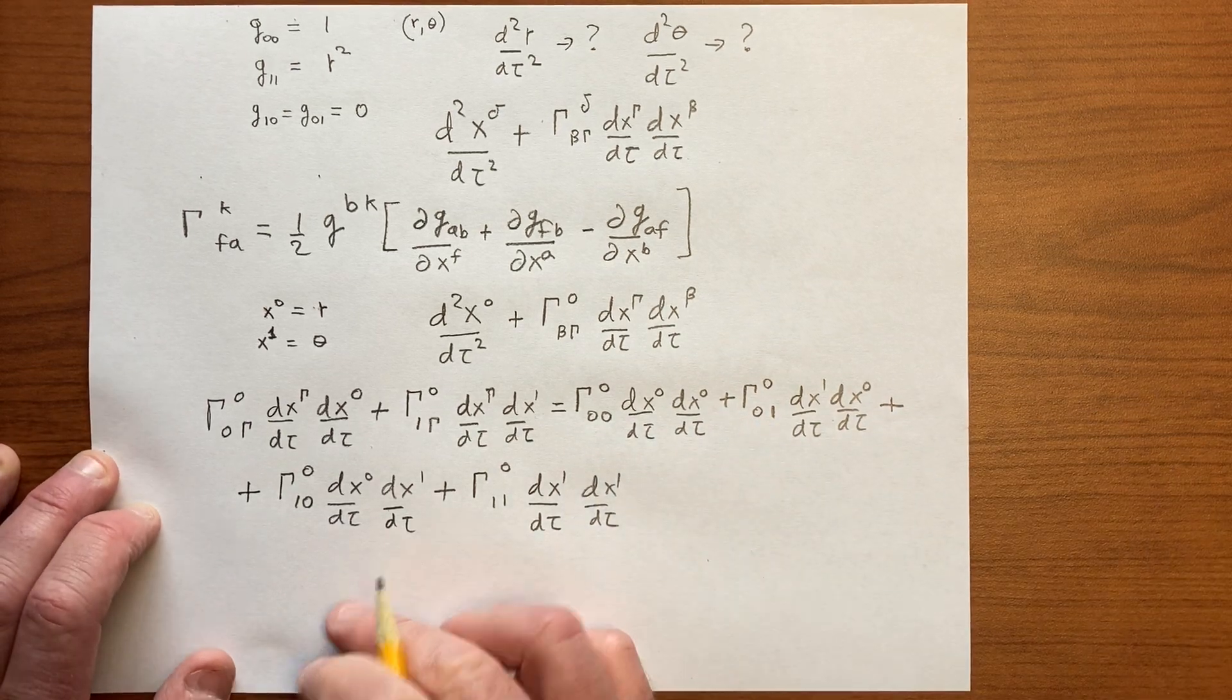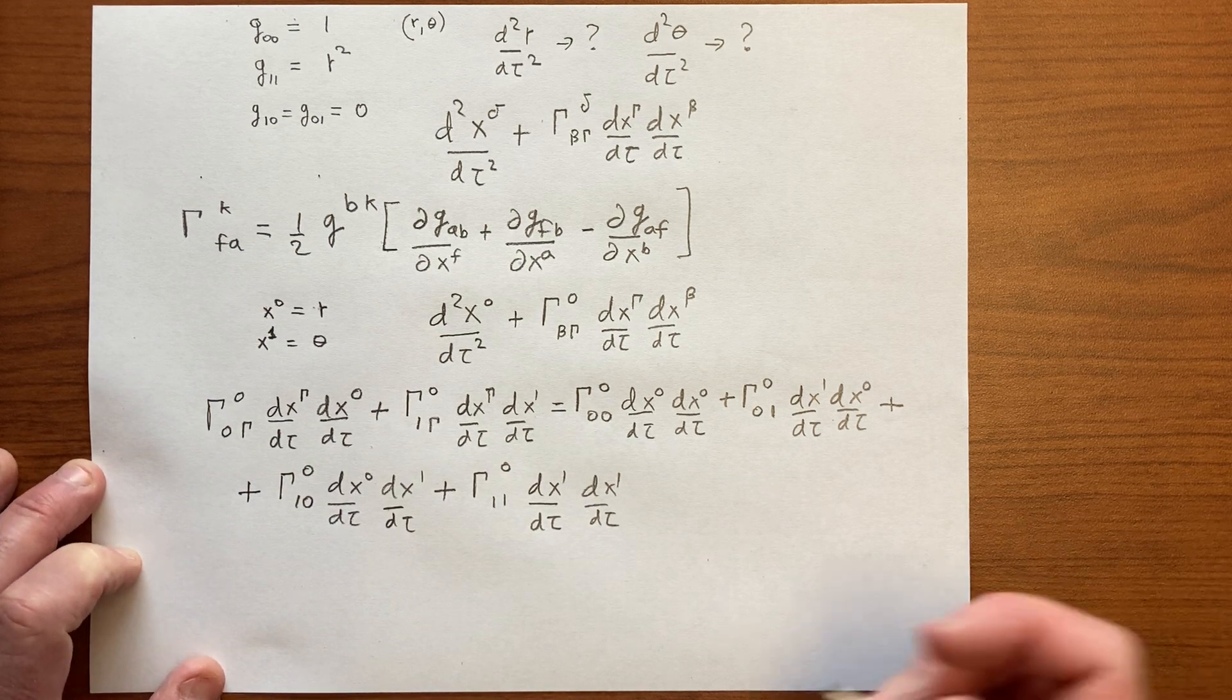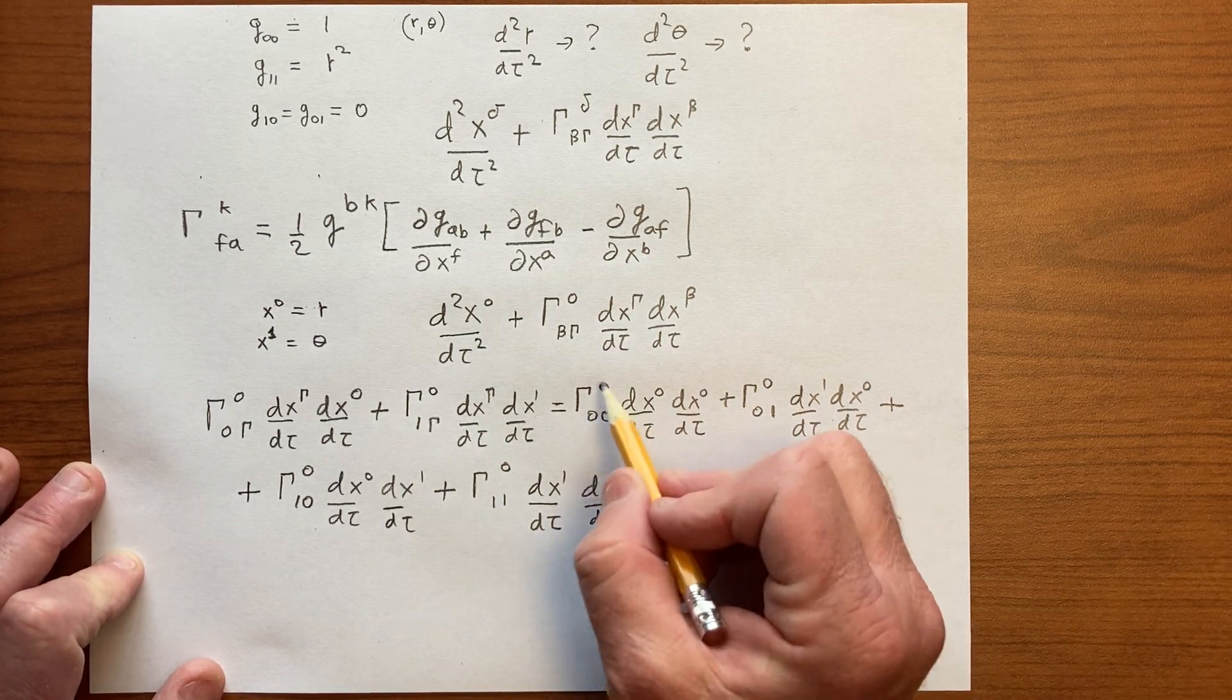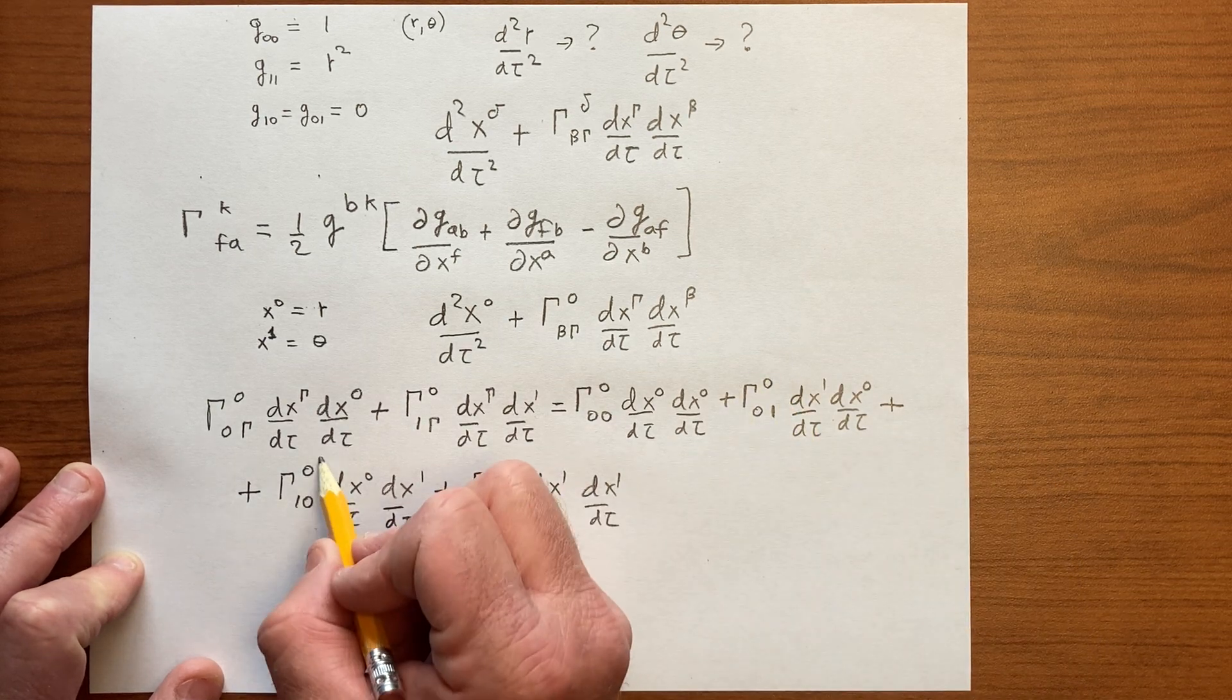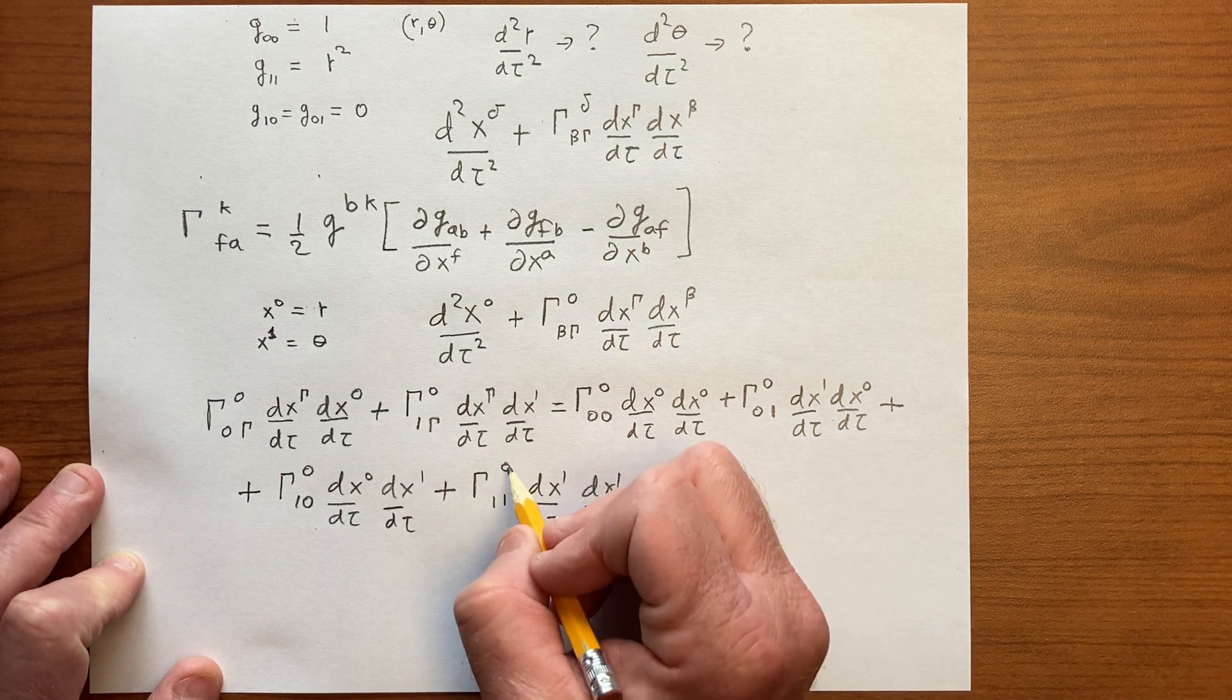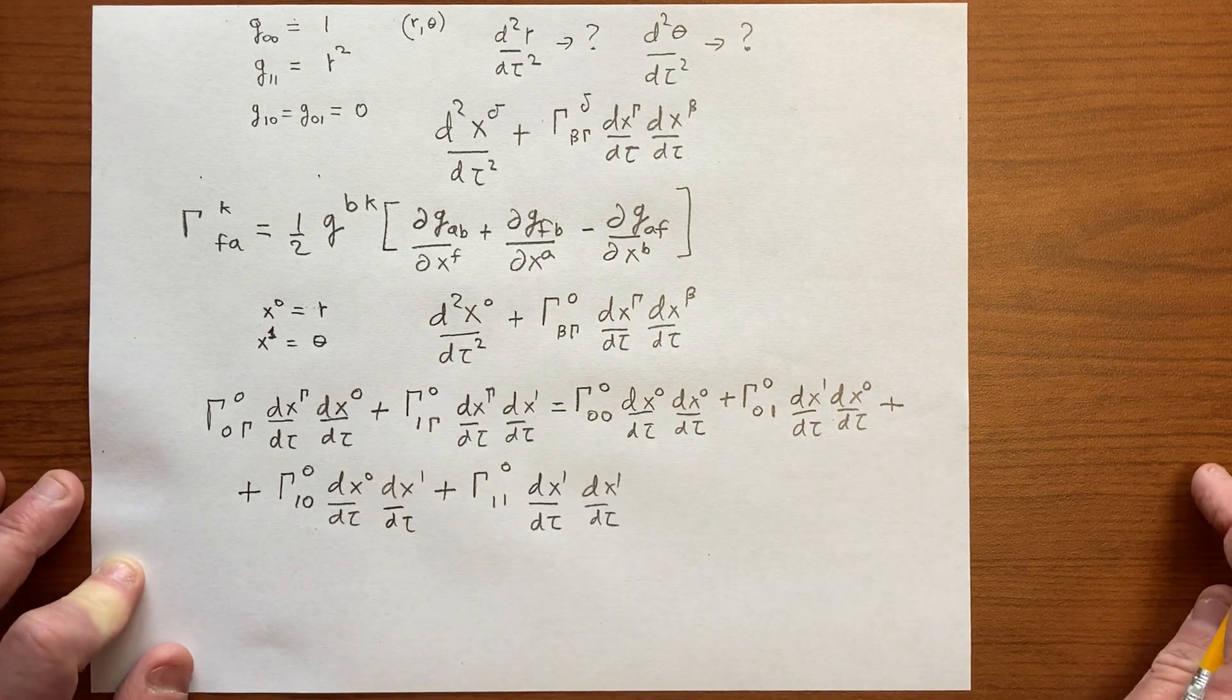And so now we have to evaluate the connections. So let's start with Γ^0_00. So we have Γ^0_00, Γ^0_01, which by symmetry is the same as Γ^0_10, and then we have Γ^0_11. So we really have three terms that we have to derive.